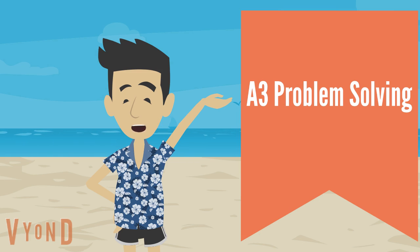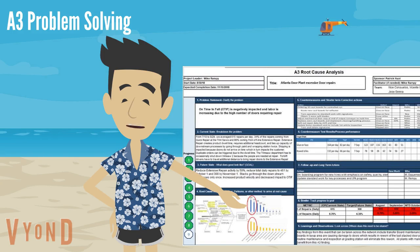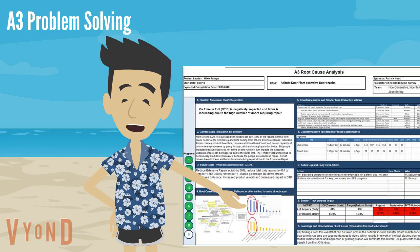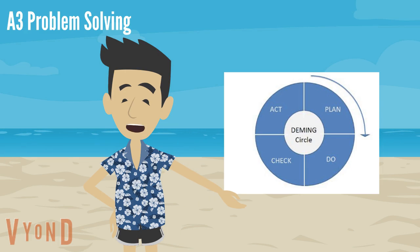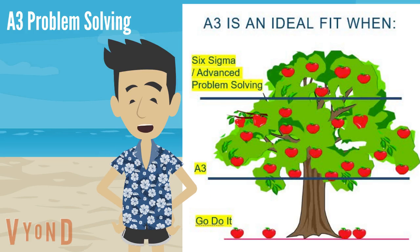A3 is a well-structured methodology to solve problems, first developed by Toyota but used today by many lean practitioners. It's called an A3 because it fits onto an A3 sized piece of paper, and it clearly displays the various steps that a team has used to solve a problem. It's very much aligned with PDCA, and works well as a tool for most of our problem solving needs.